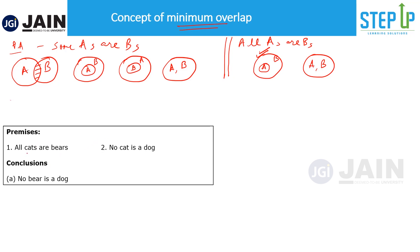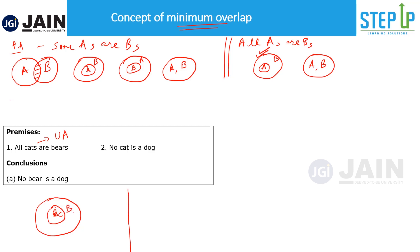Let's take an example: the two premises are 'all cats are bears' and 'no cat is a dog', and we need to conclude whether 'no bear is a dog'. First, 'all cats are bears' is a universal affirmative statement, so there are two possibilities: cats inside bears, or cats equals bears.